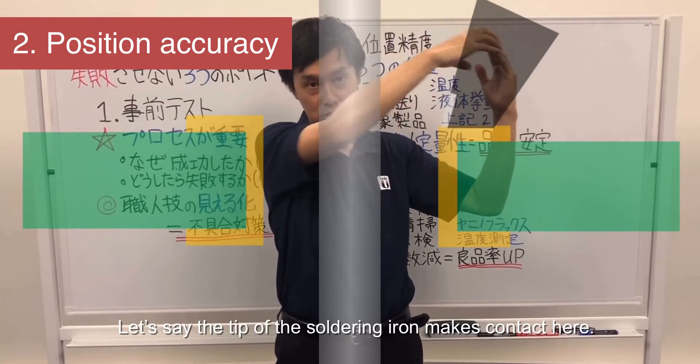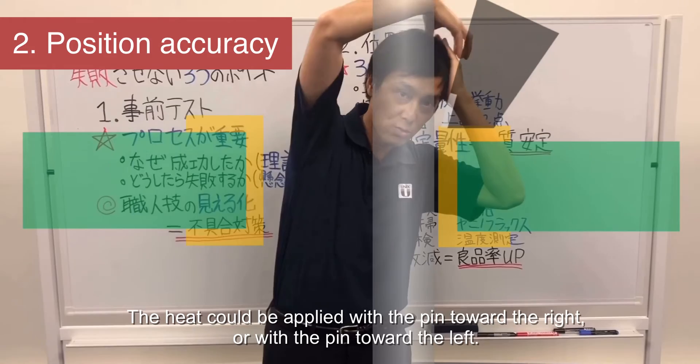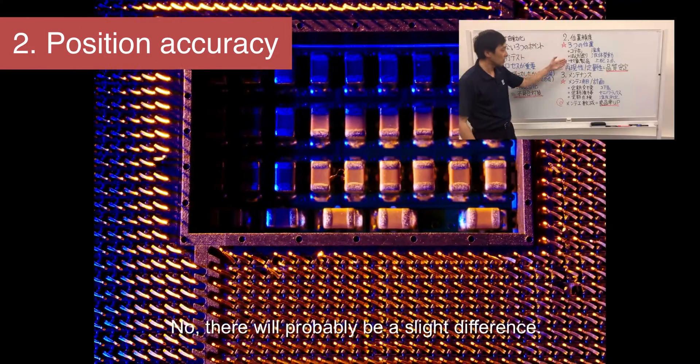Let's say the tip of the soldering iron makes contact here. The heat could be applied with the pin toward the right, or with the pin toward the left. Do you think the outcome will be the same either way?